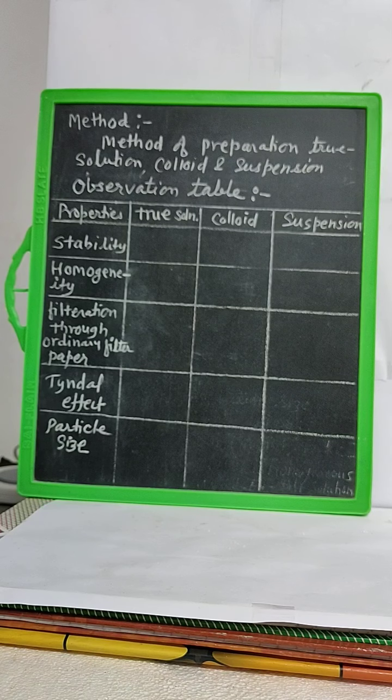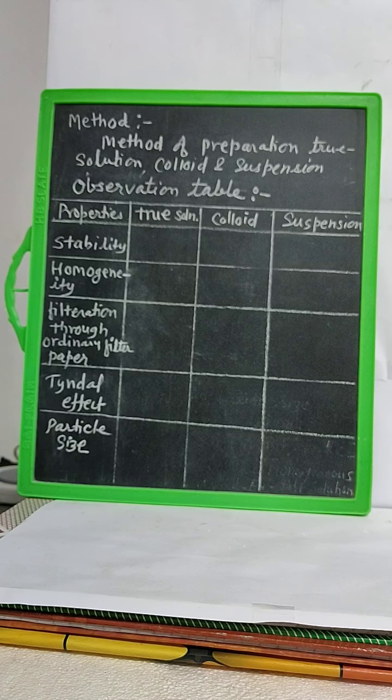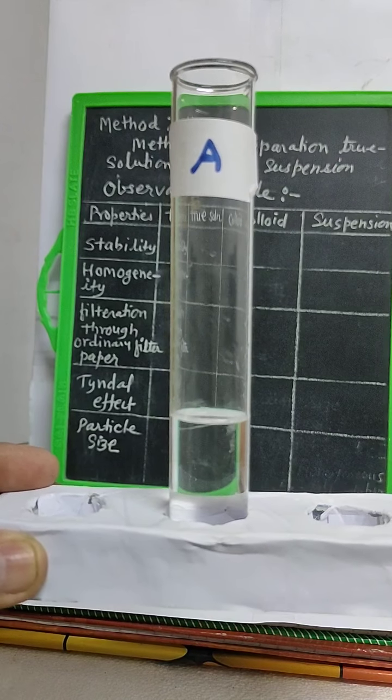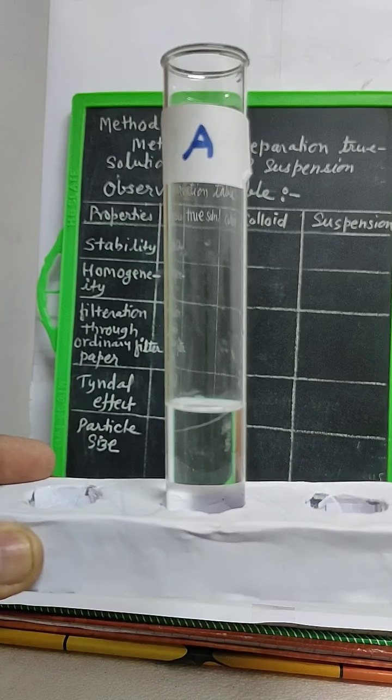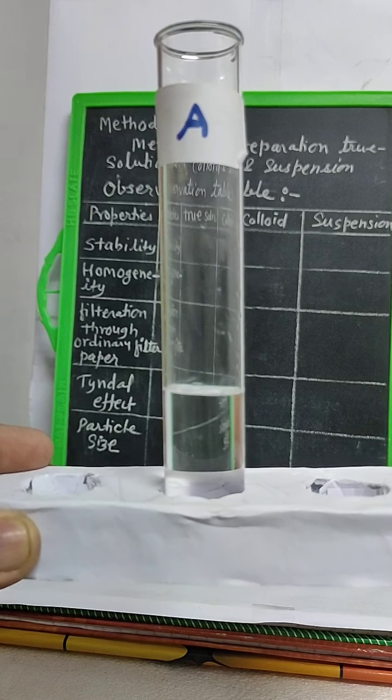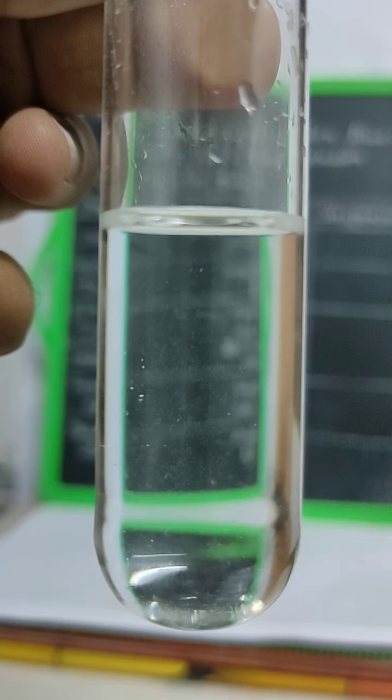Now we will complete this table by observing the three solution systems. Homogeneous means the same throughout. True solution is homogeneous and stable, appearing as pure water with nothing visible.